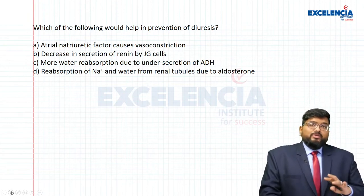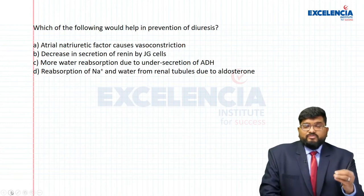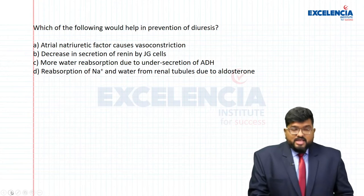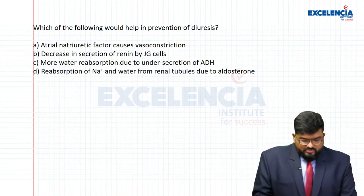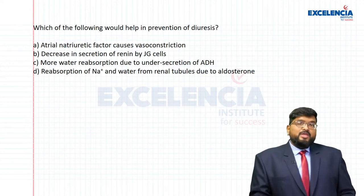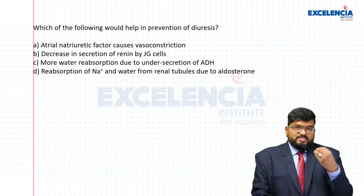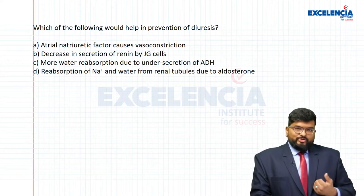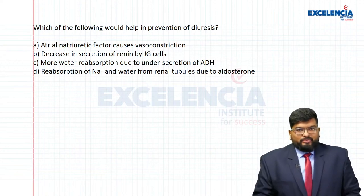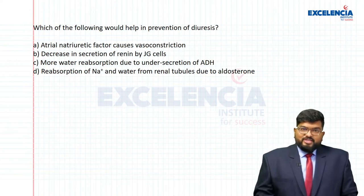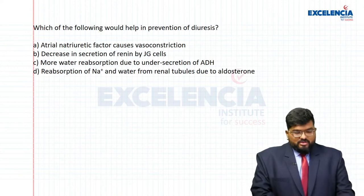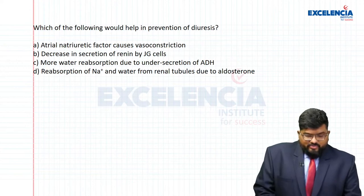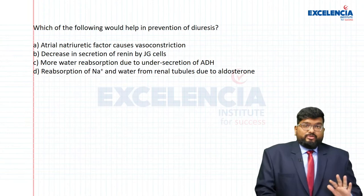In the renin-angiotensin mechanism, the first thing we have is ADH — anti-diuretic hormone. Option C talks about ADH: more water reabsorption due to under-secretion of ADH. If water concentration is going down and ADH's function is to bring about reabsorption of water from the distal convoluted tubule, would its under-secretion be of any help? No. So option C is out.